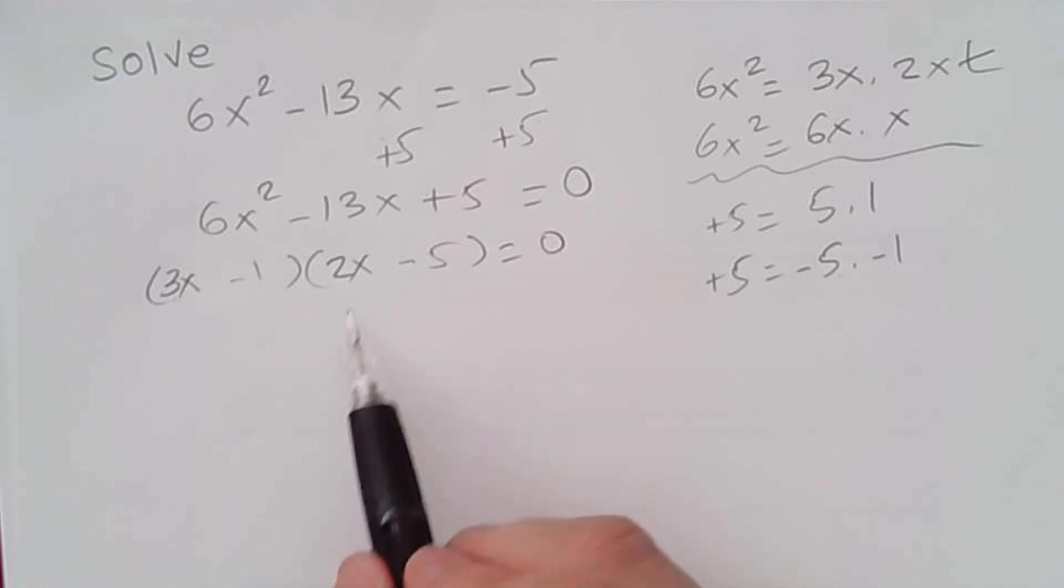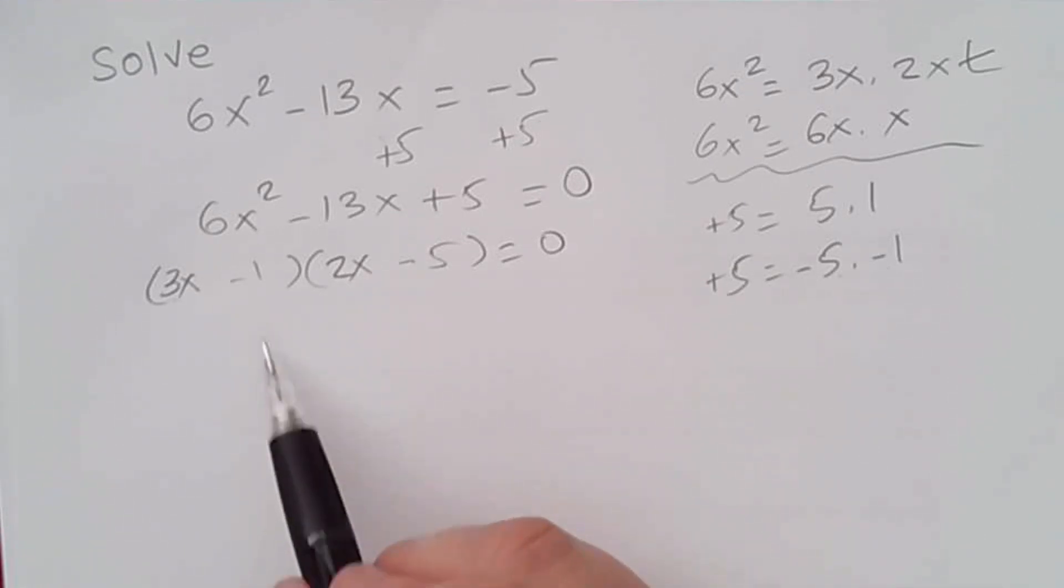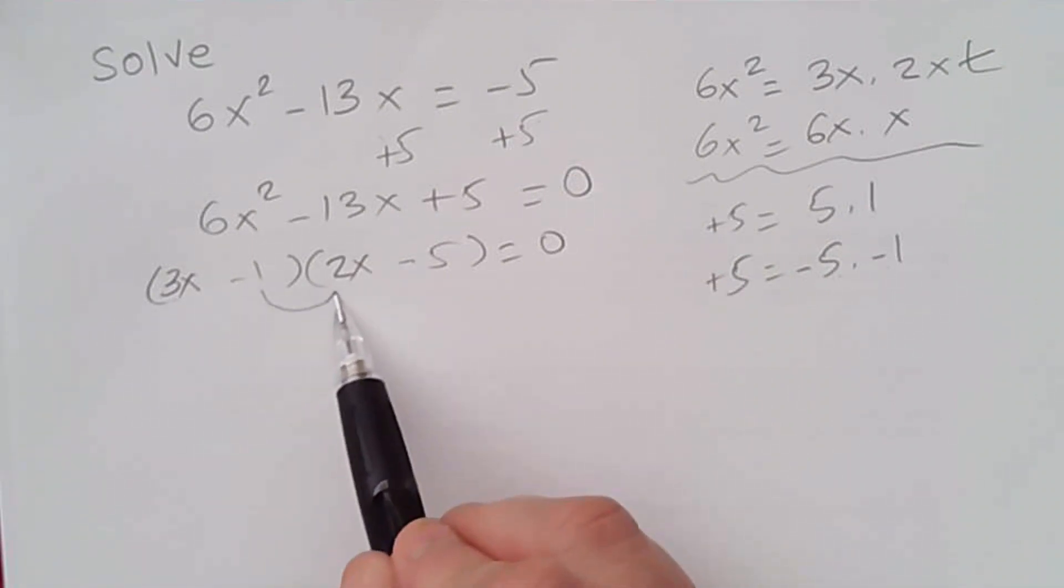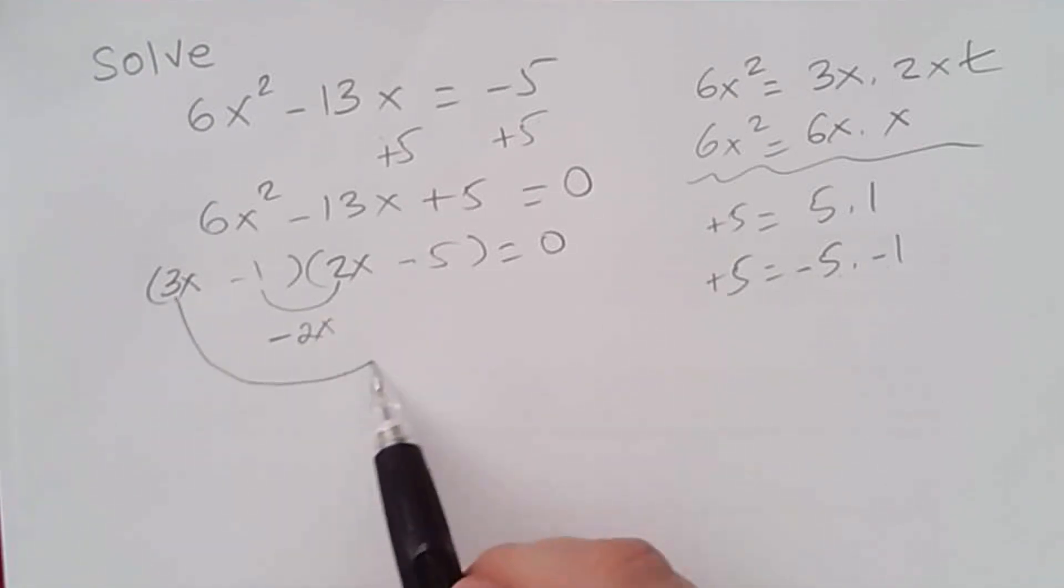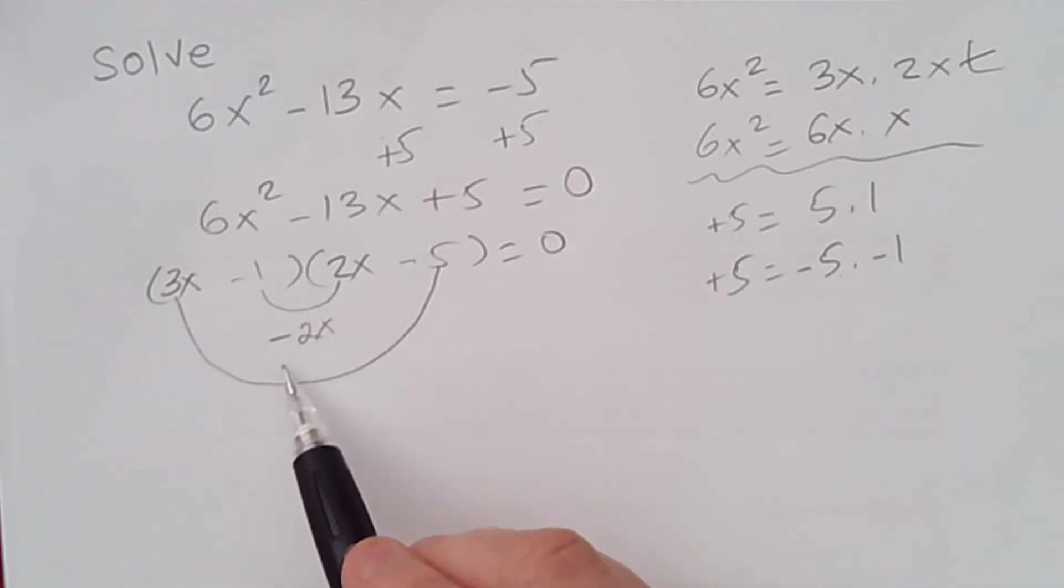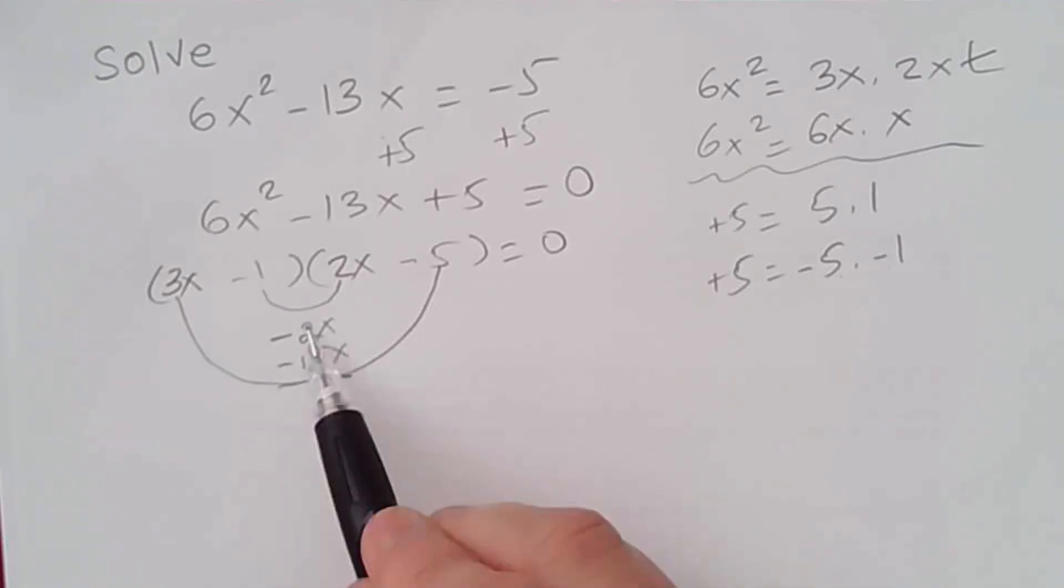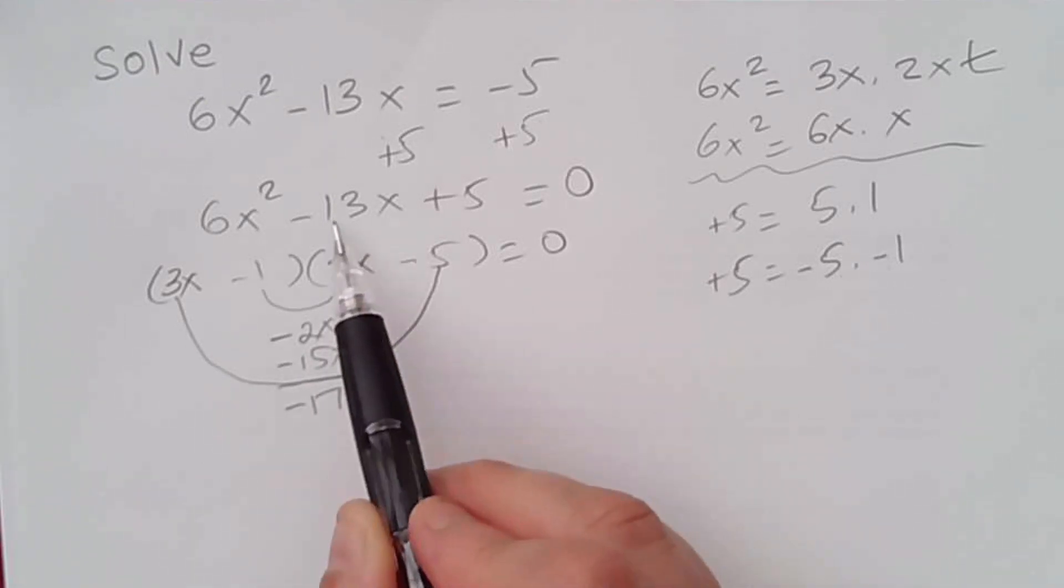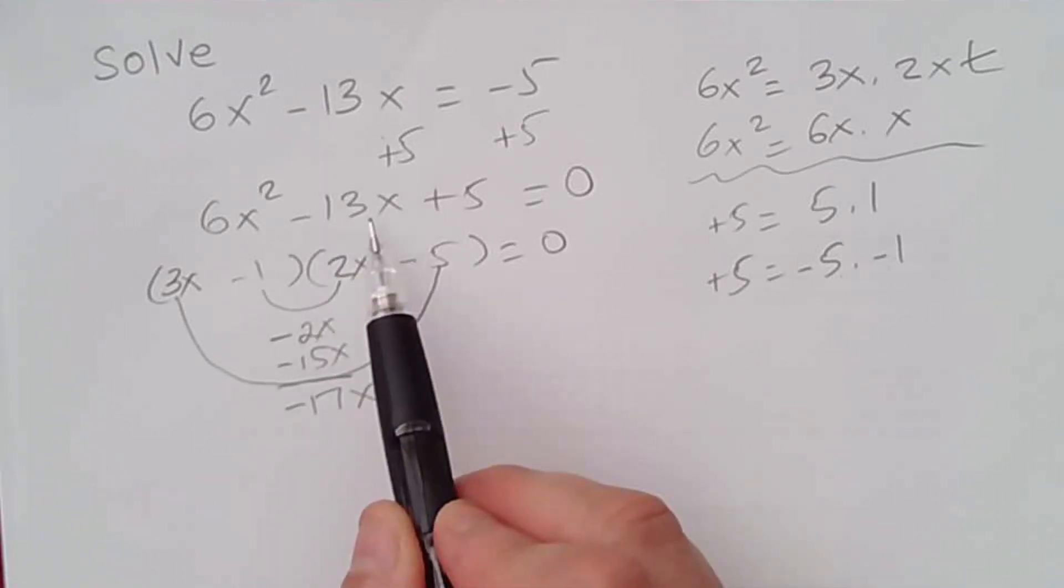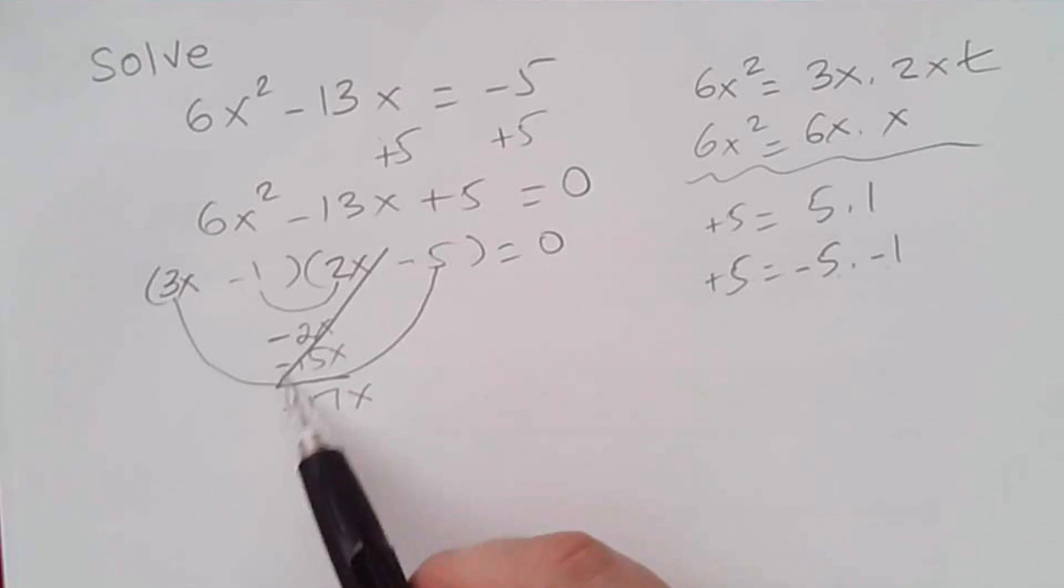The way you can check it without actually doing the FOIL is multiplying the inner term, negative 1 times 2x gives me negative 2x. And 3x times negative 5 gives me negative 15x. If you add these two numbers, you're going to end up with negative 17x. Unfortunately, that's not what we have in here. So this is not the correct factoring.